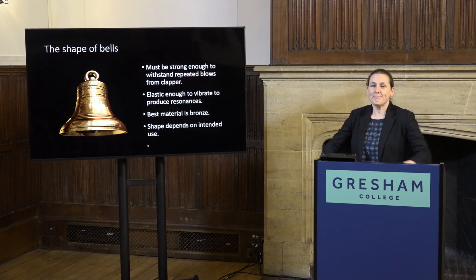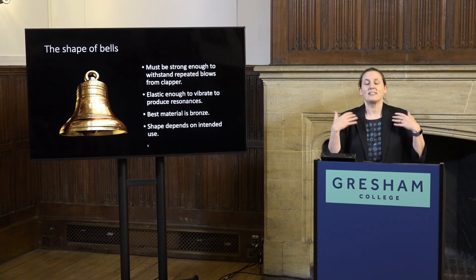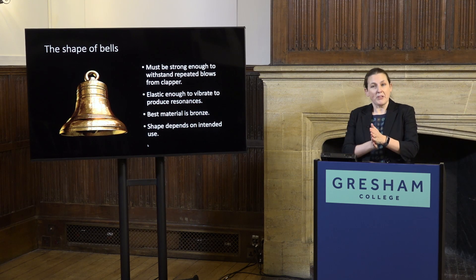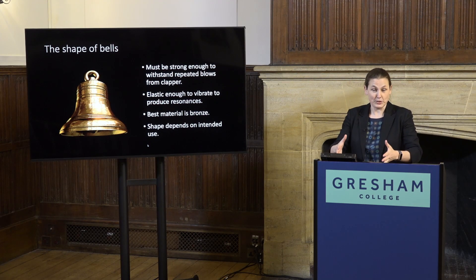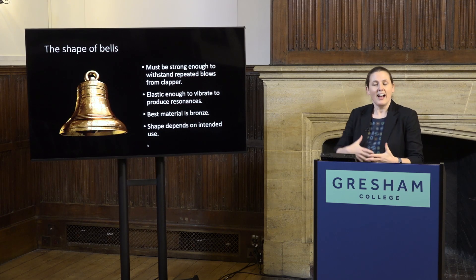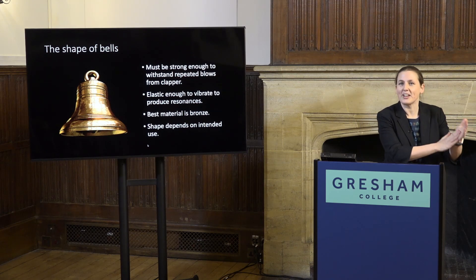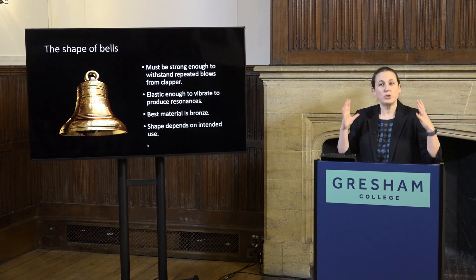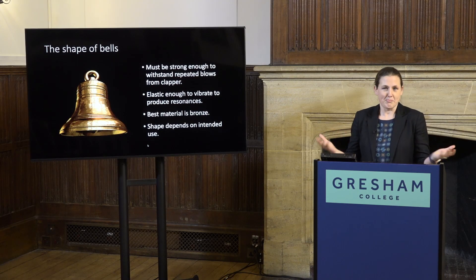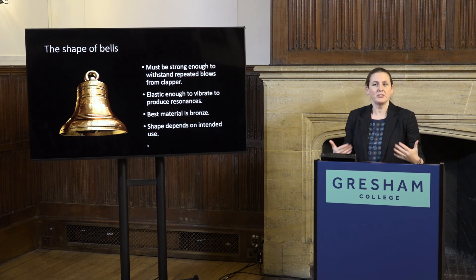Back in the dawn of time, somebody realised that if you get a bit of metal and bang it with something, it makes a nice loud noise. That could develop into gongs, which are pretty much flat. But if you bend your piece of metal over and join it together, you get a much more resonant, powerful sound — and this is the origin of bells. What metal should you use? It has to be strong enough to withstand repeated hitting from a clapper or hammer, but not so rigid that you get a flat sound. After some time, it was found that bronze is best — an alloy of copper and tin. Copper and tin alone are too soft, but bronze is just right.